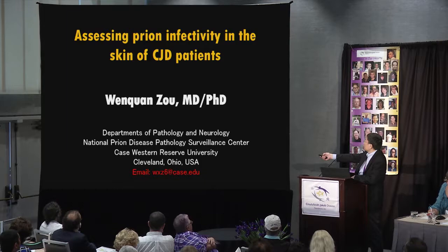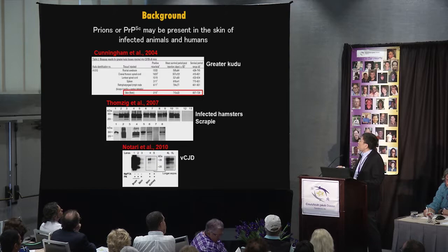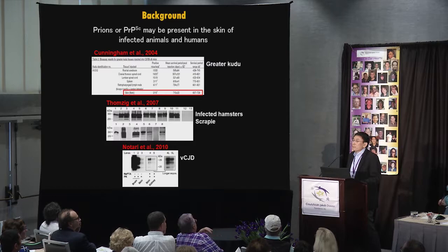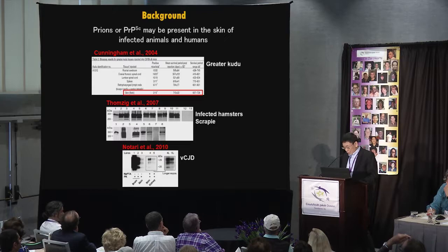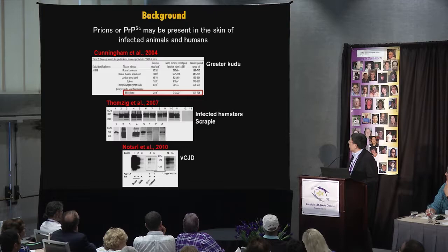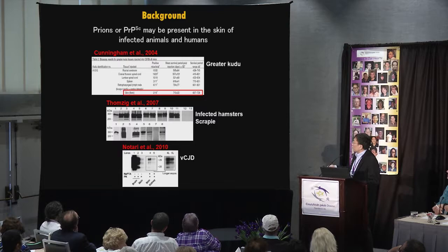Why skin? A few previous studies have suggested that the prions — PRPSC, the infectious pathogens in prion diseases — may be present in the skin of infected animals and humans. For example, in 2004, Cunningham and co-workers found that 2 out of 18 mice injected with prion-infected scrapie skins developed prion disease, also using Western blot analysis for detecting PRPSC.